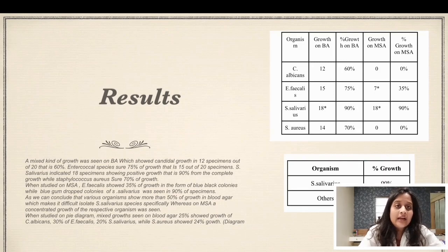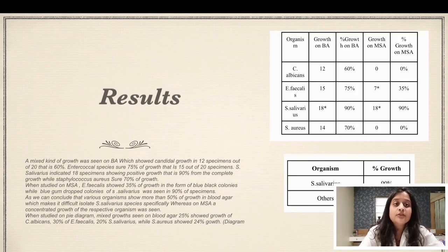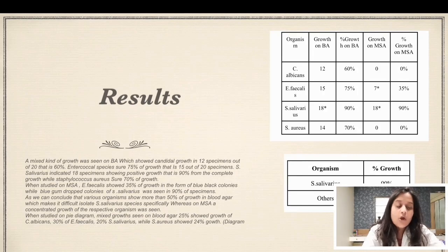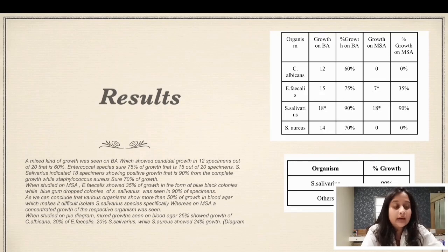S. salivarius had 18 out of 20 samples on blood agar showing growth, that is 90% of the total growth. The same results were obtained on MSA with S. salivarius. Talking about S. aureus, that is Staphylococcus aureus, 14 out of 20 samples showed growth, that is 70% on blood agar, while on MSA, 0% of growth was seen.